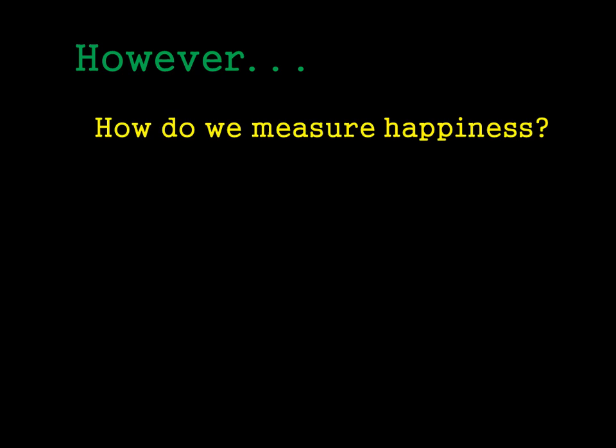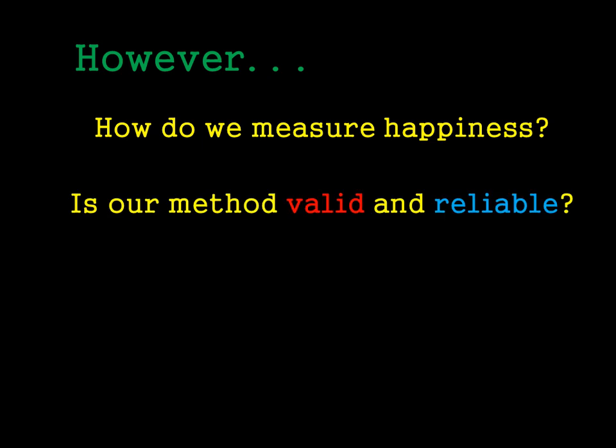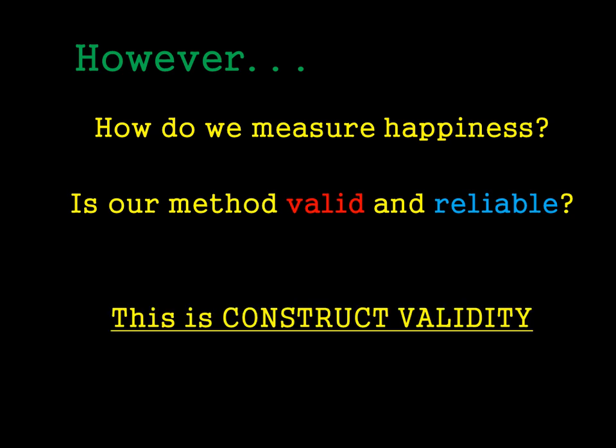However, we have a problem here. How do we measure a psychological trait such as happiness? It's not something we can see, so how do we measure it? And if we do measure it, is our method valid and reliable? And this is what construct validity is all about.